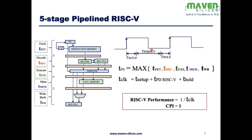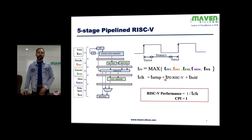Let's look at how to calculate the clock frequency. The clock period should accommodate the propagation delay of the circuit, setup time, and hold time. In the case of a flip-flop, we consider clock-to-Q delay instead of hold time. The propagation delay considers the logic for all stages: fetch, decode, execute, memory, and write back, and we take the maximum. So clock period equals setup time plus propagation delay of the processor plus hold time.